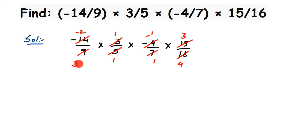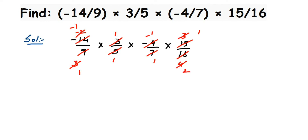We also cancel the 3 in the numerator with the 3 in the denominator — 3 ones are 3. Now we're left with minus 2 in the numerator and 4 in the denominator, so we cancel those in the 2 table: 2 ones are 2 and 2 twos are 4, leaving minus 1 over 2.